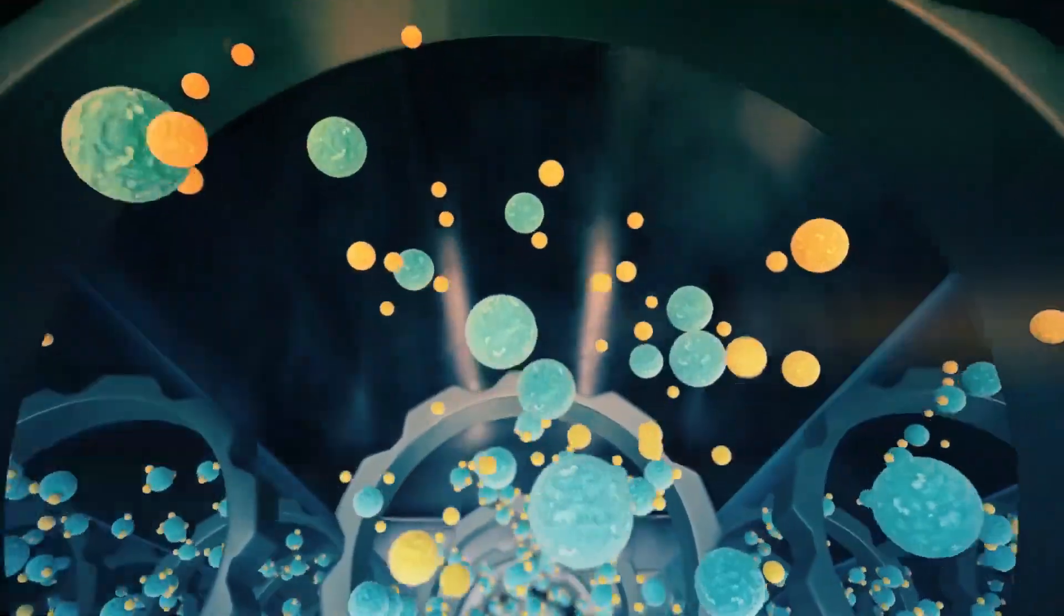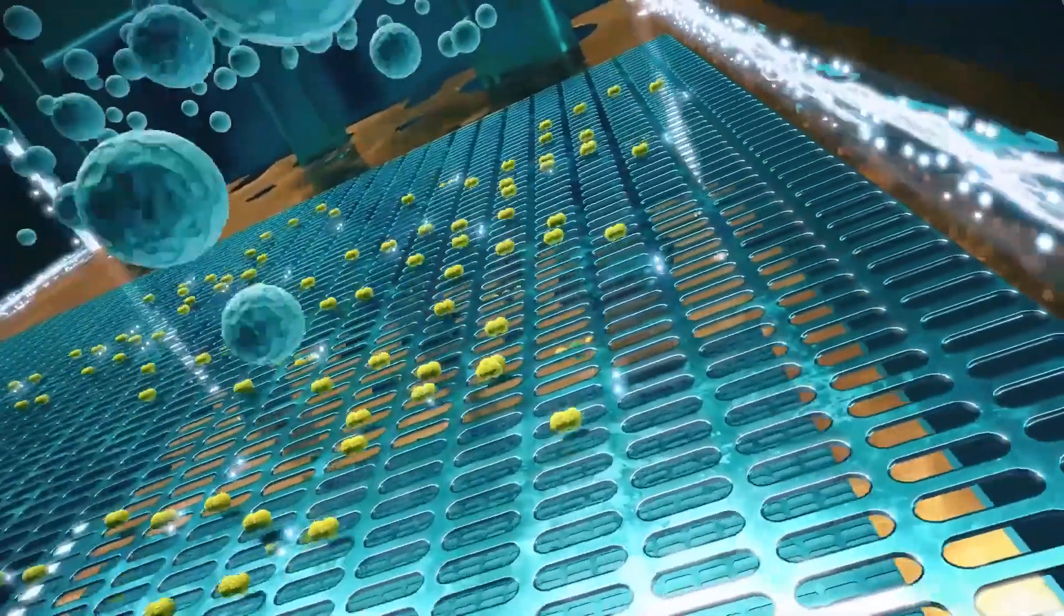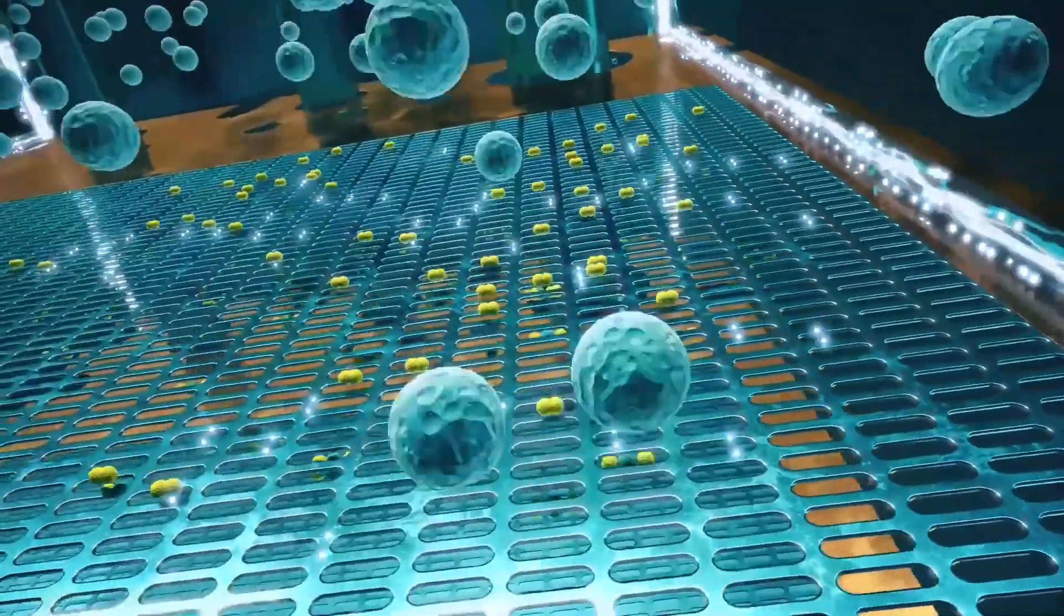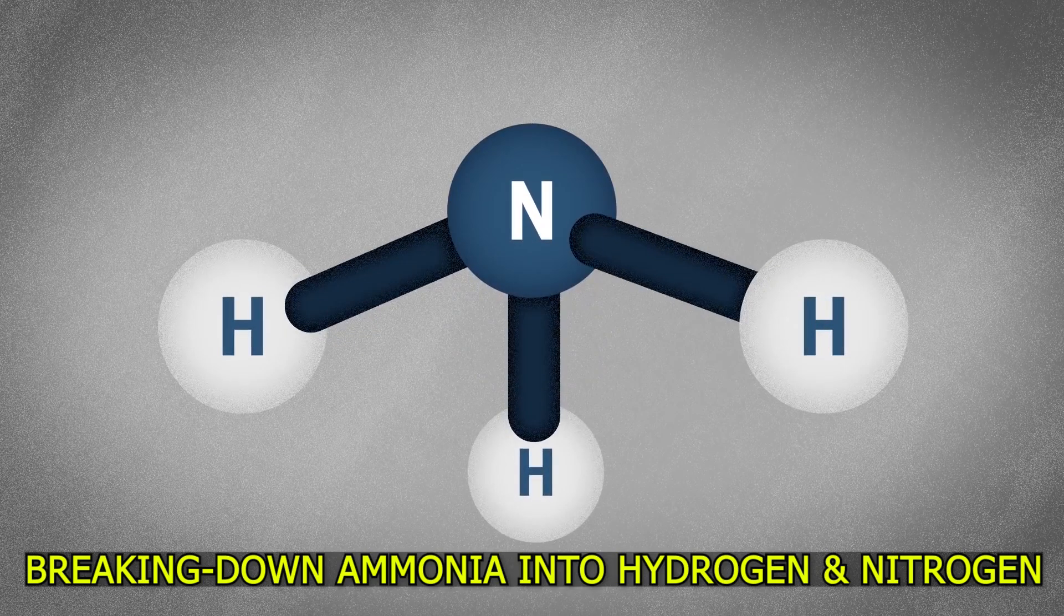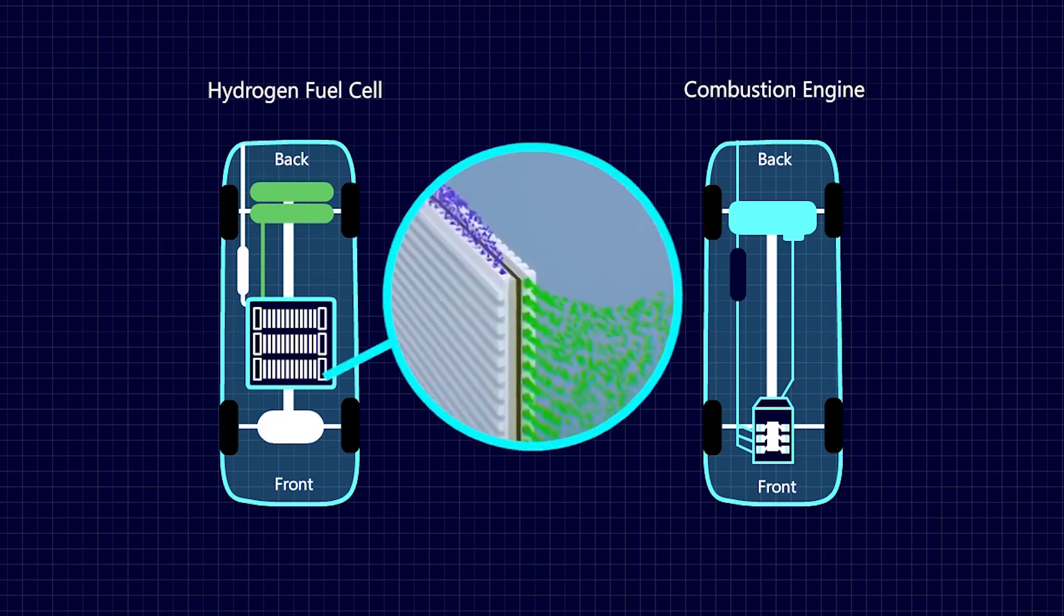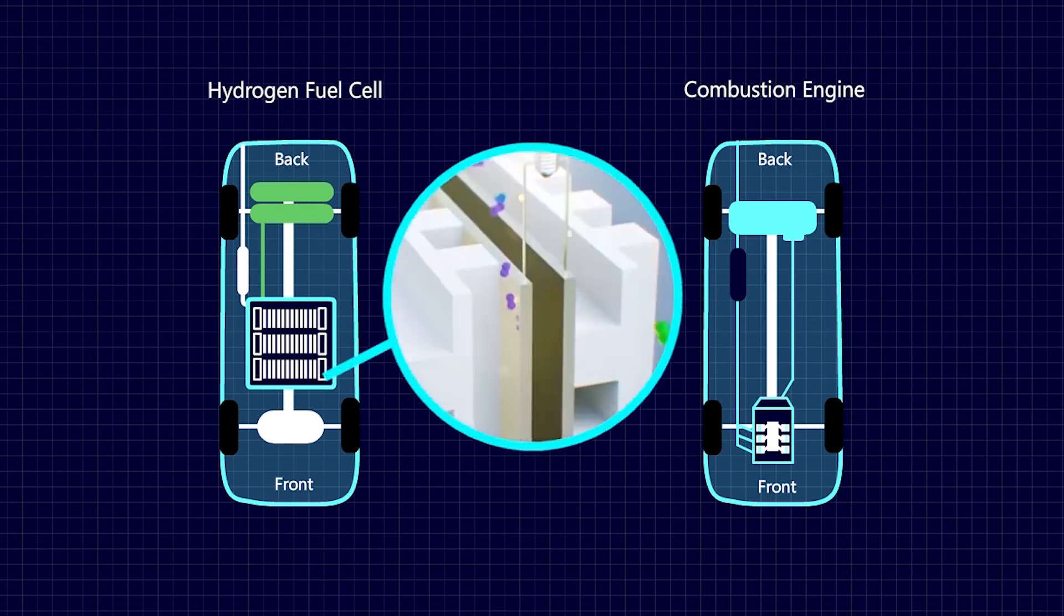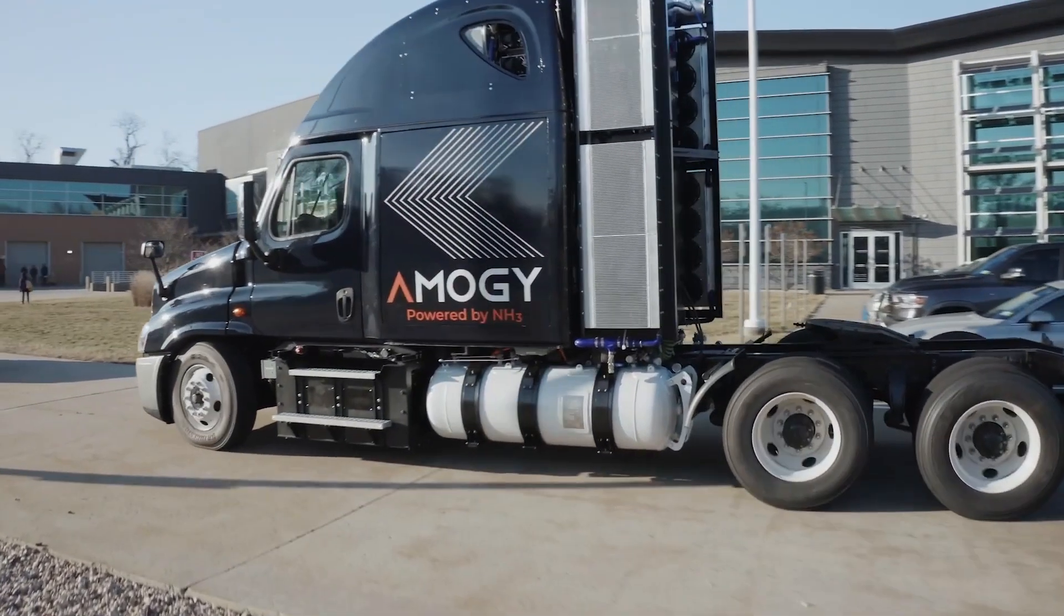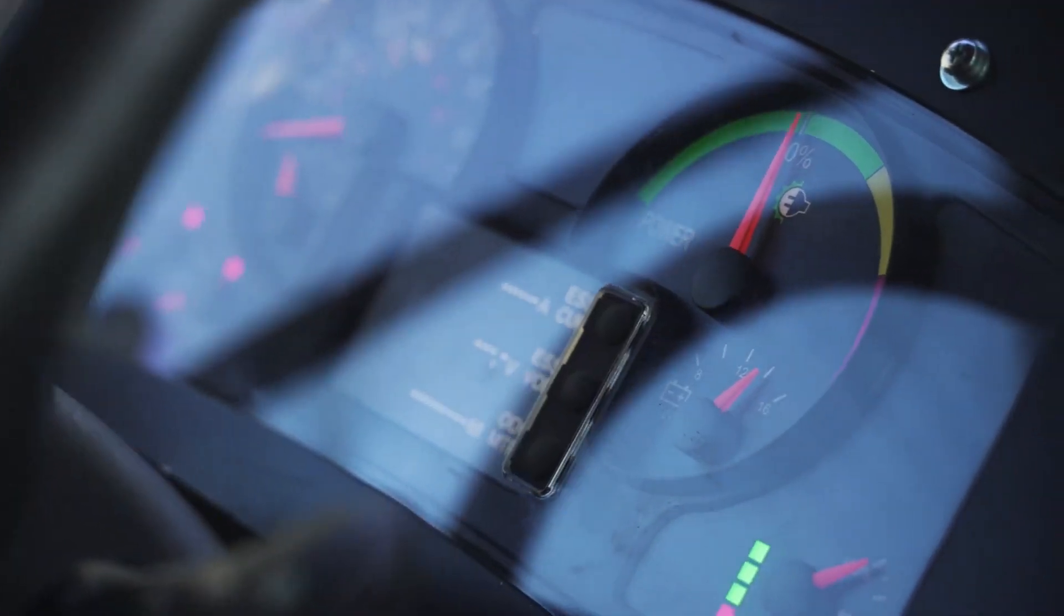Intriguingly, there are three major methods of utilizing ammonia as a fuel source, each with unique advantages and applications. The first method involves breaking down ammonia into hydrogen and nitrogen, utilizing hydrogen to generate electricity through a fuel cell, a breakthrough witnessed in AMVE's world-first ammonia-powered zero-emissions tractor.